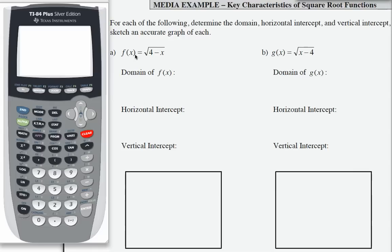If you look at our first function, f of x equals the square root of 4 minus x. Remember there's a 2 here. This is a square root function. Because it is an even root function, then I must have only positive numbers or zero underneath the radical.